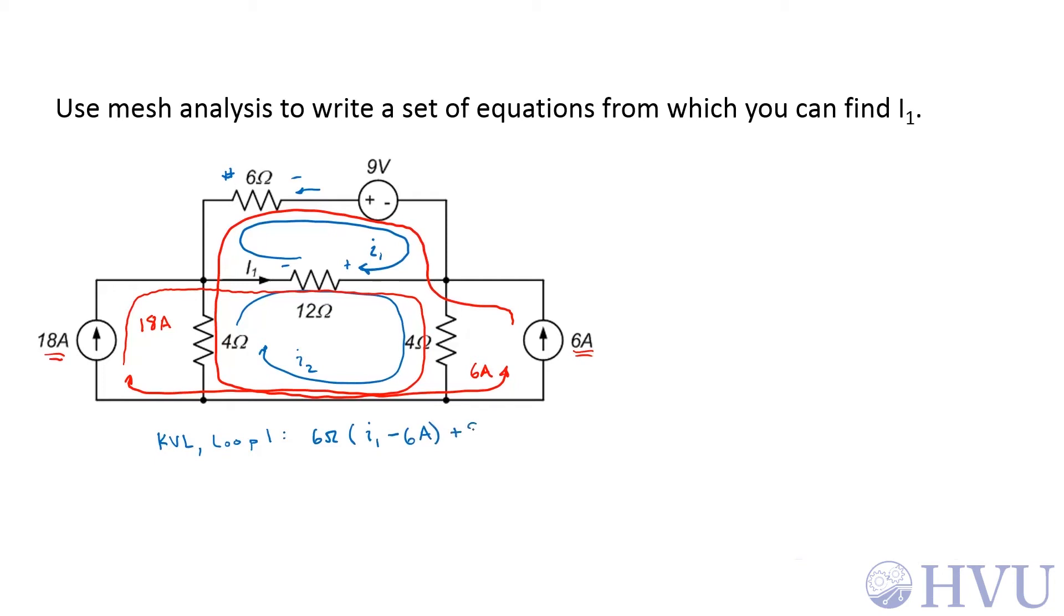Then I see my 9-volt source. For the 12-ohm resistor, I have 12-ohms times the sum of its currents. I1 is entering the positive terminal and I2 enters the negative terminal, so that's going to be I1 minus I2. I also have this 18-amp constrained loop going through that resistor. Now it enters the negative terminal, so that becomes minus 18-amps. That brings me back to my starting point, so those all add up to zero.